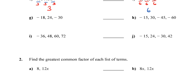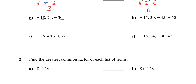For letter G, don't worry about the negative sign — just look at 18, 24, and 30. 1 works, and there's a bigger number: 2 works, 3 works, 4 doesn't, 5 doesn't, but 6 does. 6 divides all three of those numbers evenly and is the biggest number, so 6 is my greatest common factor.